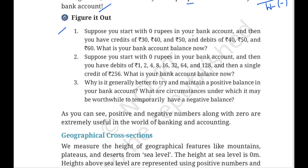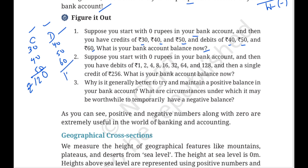Next sum: Suppose you start with rupees 0 in your bank account, and then you have credits of rupees 30, 40, 50 and debits of rupees 40, 50, and 60. What is your bank account balance now? Total credit deposit is 30 + 40 + 50 = 120 rupees. Total debit withdrawn is 40 + 50 + 60 = 150 rupees. So 120 minus 150 = minus 30 rupees. The account will be rupees minus 30 — overdrafting has occurred.